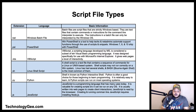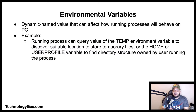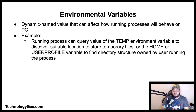An environmental variable is a dynamic name-value that can affect the way running processes will behave on a computer. They are part of the environment in which a process runs. For example, a running process can query the value of the TEMP environment variable to discover a suitable location to store temporary files, or the HOME or user profile variable to find the directory structure owned by the user.